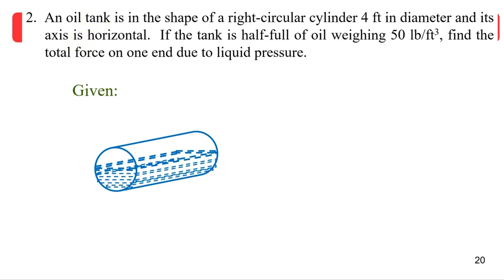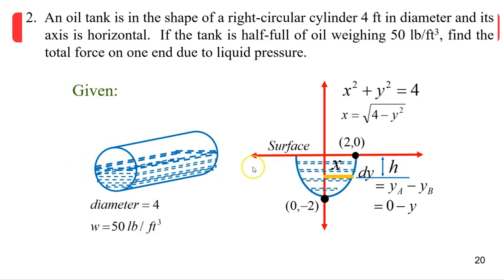We are given a right circular cylinder whose axis is horizontal. It has a diameter of four feet, and the liquid content inside has a weight density of 50 pounds per cubic foot.